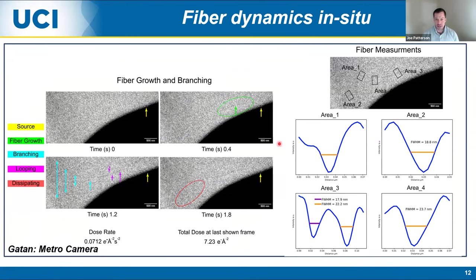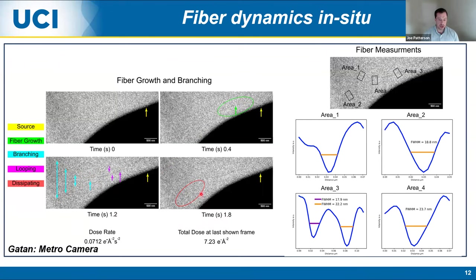This is hot-off-the-press data. We have been able to capture individual fiber dynamics. This is the edge of the electrode, and this is a point where a fiber is going to nucleate. At 0.4 seconds after nucleation, we start to see the first formation of an individual fiber. Moving to 1.2 seconds, the fiber is forming a loop-like structure and has also branched into two individual fibers. By 1.8 seconds, we see this has started to degrade as well. These behaviors - growth, branching, looping, and dissipating - are captured for the first time.